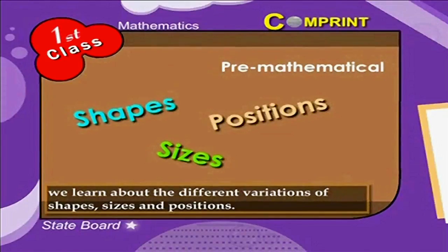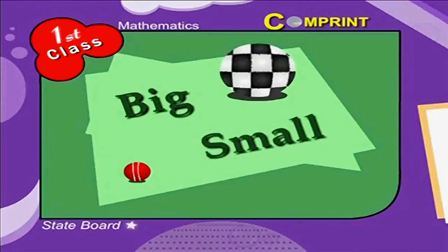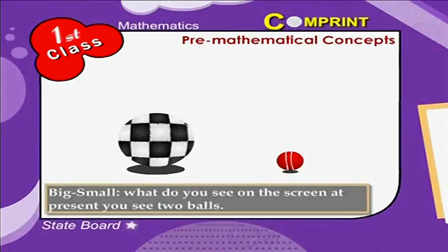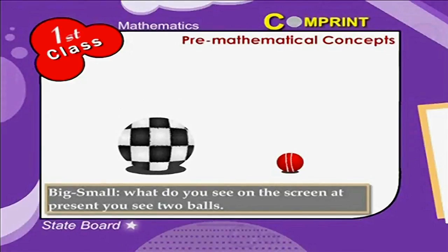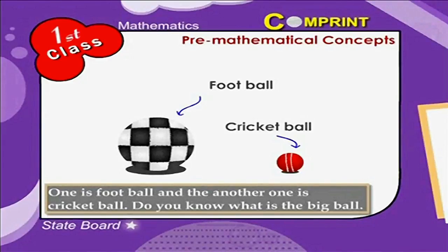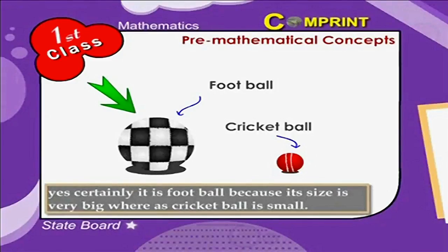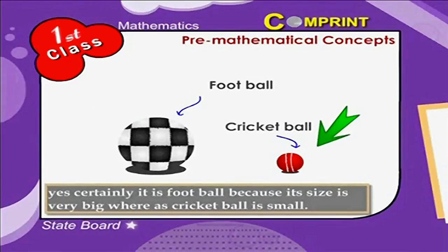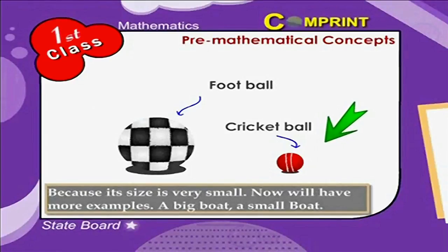Look at the pictures. What do you see on the screen? At present you see two balls — one is a football and the other one is a cricket ball. Do you know which is the big ball? Yes, certainly it is football because its size is very big, whereas the cricket ball is small because its size is very small.